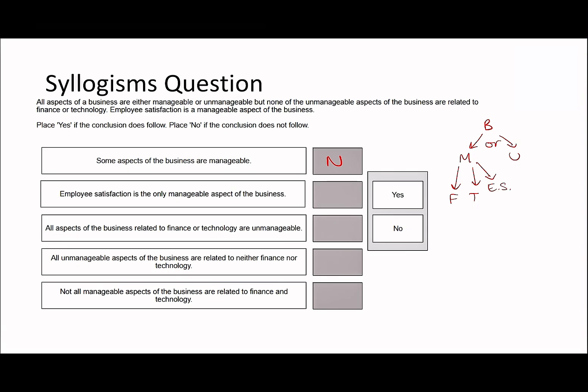Employee satisfaction is the only manageable aspect — that's false again, because as we can see, finance and tech aspects are going to be manageable. All aspects of the business related to finance or technology are unmanageable — that's also no, because we know they're manageable. All unmanageable aspects are related to neither finance nor technology — that's true, it's just a rewording of the premise. Not all manageable aspects are related to finance and technology — that's true because we also have employee satisfaction.